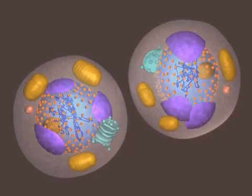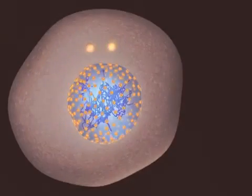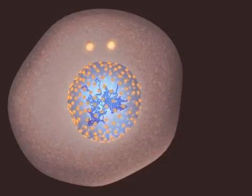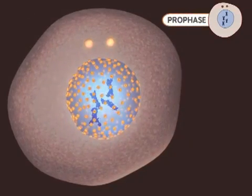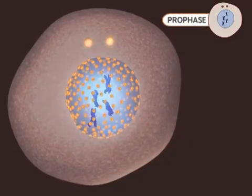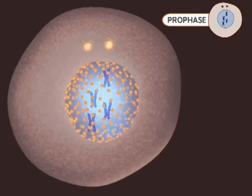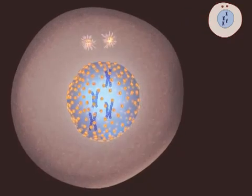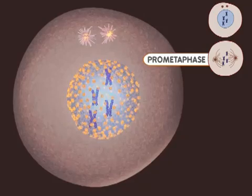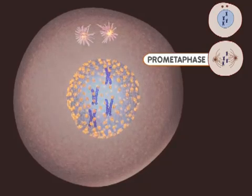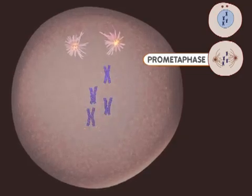Let's watch the process one more time. Mitosis begins with prophase — notice the DNA condensing into chromosomes during this stage. Microtubules appear during prometaphase, and the nuclear membrane breaks down.